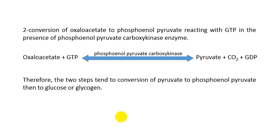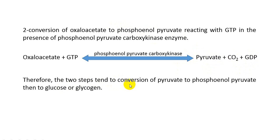So these two steps together accomplish the conversion of pyruvate to phosphoenolpyruvate. Lactate, one of the non-carbohydrate sources, is first converted to pyruvate, then pyruvate to oxaloacetate, then oxaloacetate to phosphoenolpyruvate, and the process continues toward glucose or glycogen synthesis.